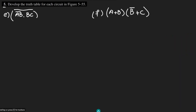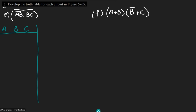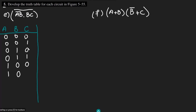The question we are given has 3 variable inputs: a, b, and c. Let me write the combinations of the inputs: 0 0 0, 0 0 1, 0 1 0, 0 1 1, then 1 0 0, 1 0 1, 1 1 0, and the last one is 1 1 1.